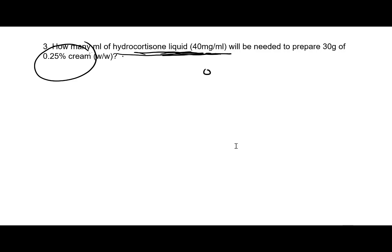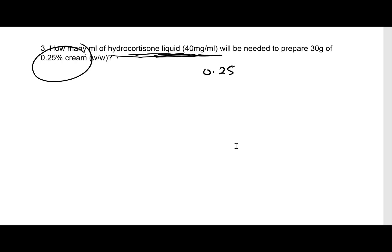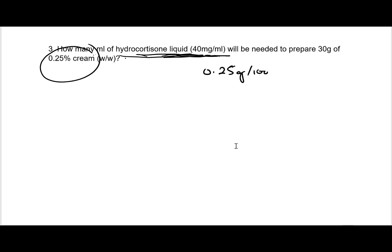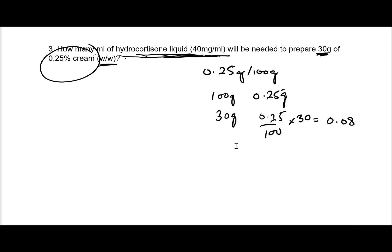The strength of the cream I have to make is 0.25 grams per 100 grams — that's weight by weight. But I have to make 30 grams of this cream. So I'm first figuring out how much hydrocortisone I actually need in the final cream. From the strength, it's 0.25 grams per 100 grams, but I have to make 30 grams.